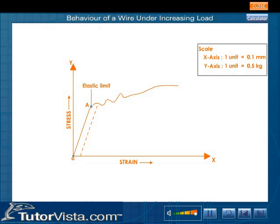Now consider the portion AB of the graph. The strain increases more rapidly than the stress, and the extension in this region is partly elastic and partly plastic. This means that if the wire is unloaded, it will not return to its original condition but will take a different path. O-C indicates the residual strain — the wire has acquired a permanent stretch.